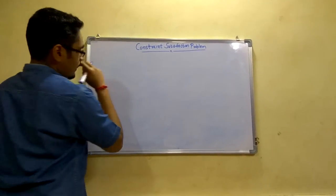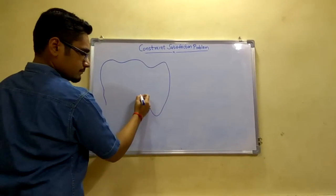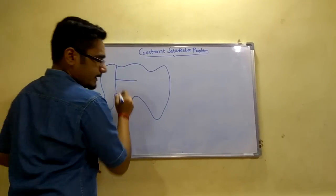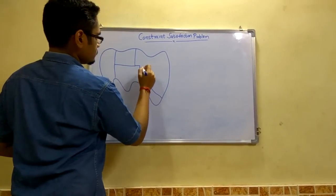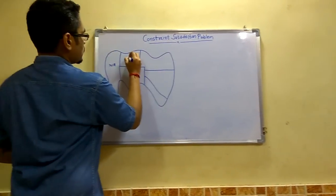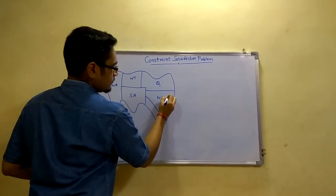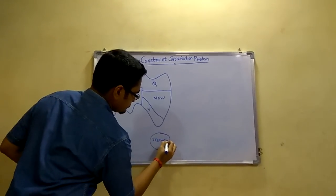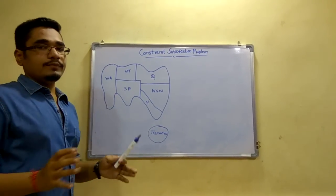Now we have a visual of the continent. This is Western Australia, this is Northern Territory, this is South Australia, this is Queensland, this is New South Wales, this is Victoria, and Tasmania is here. We need to color each of these regions according to the constraint satisfaction problem, so first we will prepare a table.